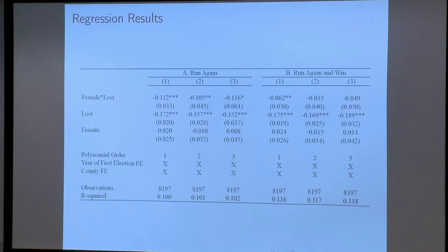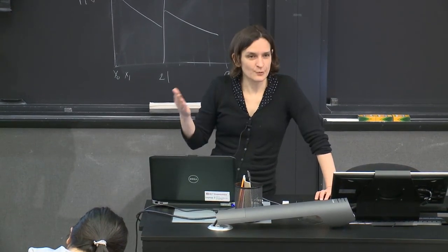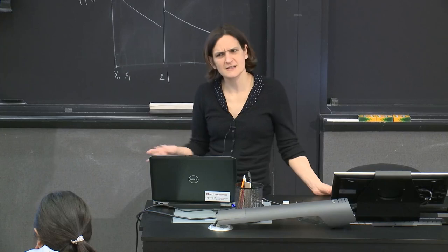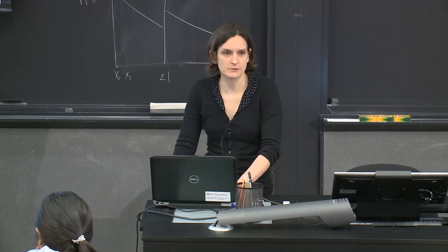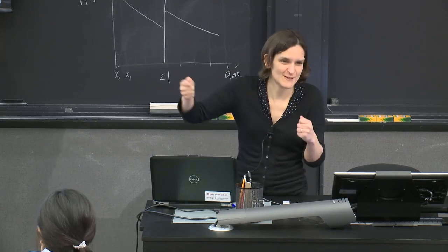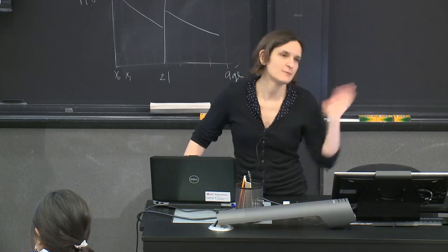Overall, females are 18% to 28% less likely to run after losing than after winning. Adding more polynomial terms doesn't change the interaction coefficient much, which is reassuring. For running-and-winning, the female coefficient becomes small and insignificant — so there is no additional female penalty for winning. In a sense, we're combining difference-in-differences with an RD framework: comparing losers and winners for males versus females, though here males are not a control group — they have their own effect and the female effect is even larger.